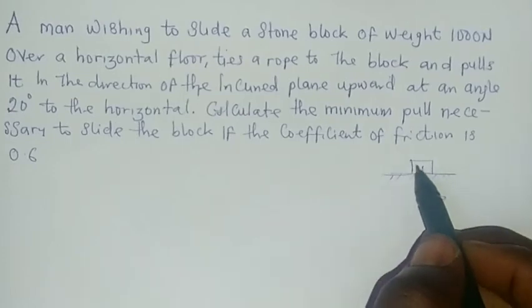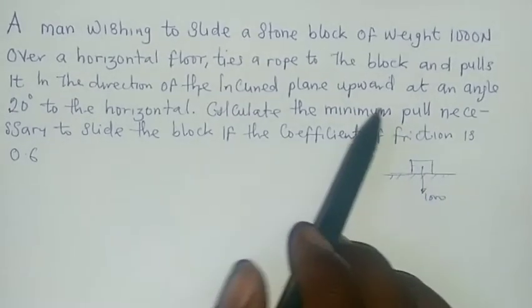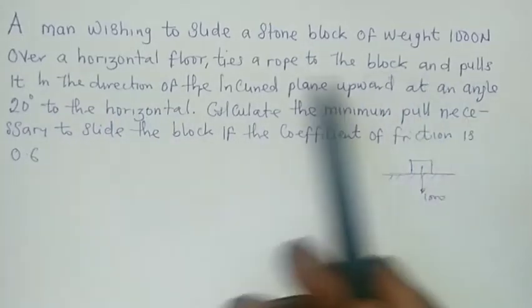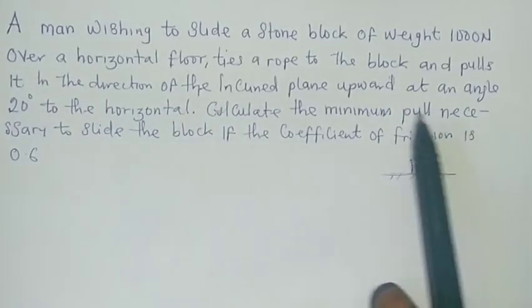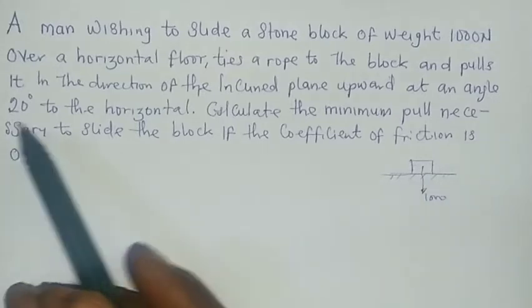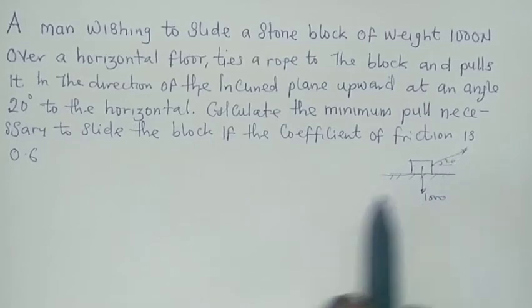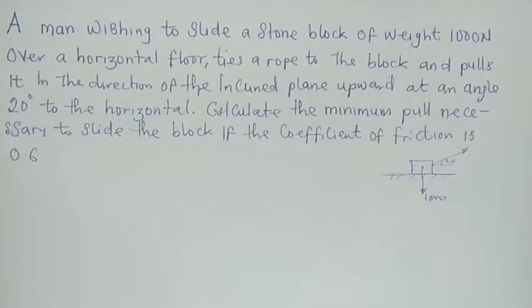He pulls the rope in the direction of the inclined plane upward at an angle of 20 degrees. We are now told to calculate the minimum pull necessary to slide the block if the coefficient of friction is 0.6.